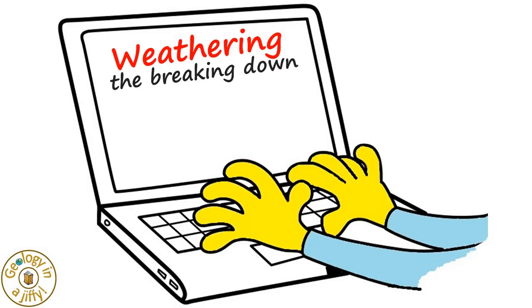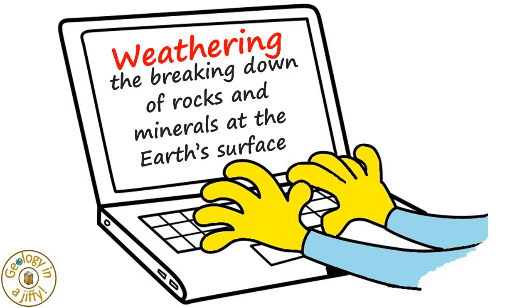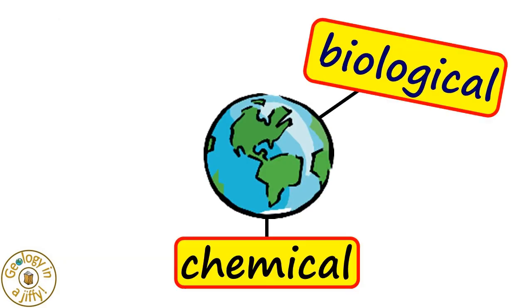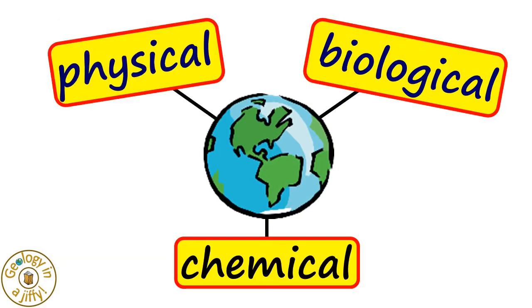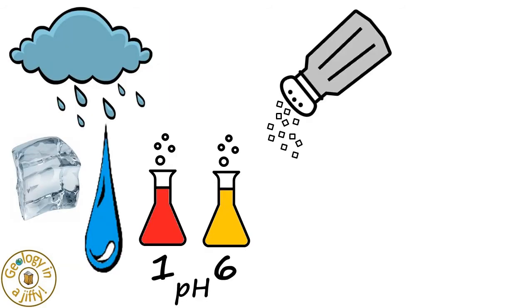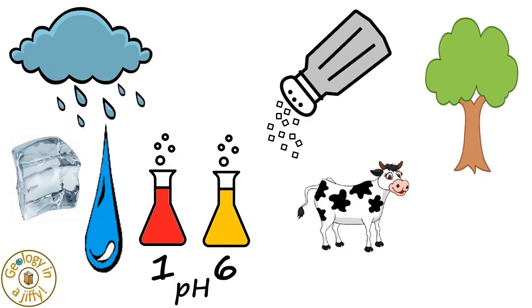Weathering is the breaking down of rocks and minerals at the Earth's surface. There are three forms of weathering: biological, chemical and physical, with water, acids, salts, plants, animals and changes in temperature all aiding the process.